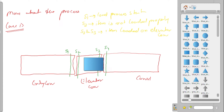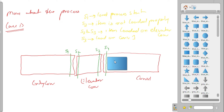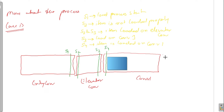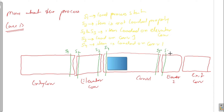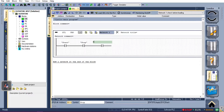As we need to load the item onto conveyor 0, the load actuator will stay on, meaning S3 and S4 sensors will both detect the item. For the time S3 is detecting the item, we need to keep the load actuator on so the item can be transferred to conveyor 0 properly. When the S4 sensor detects the box, we need to turn on the conveyor 0 actuator so that we can load the item on conveyor 0.